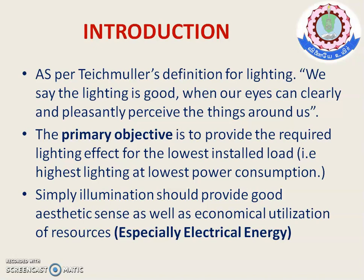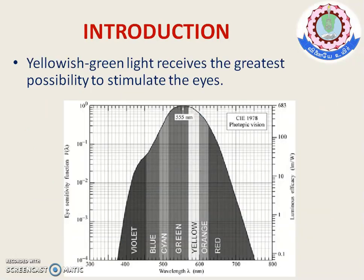Illumination should provide good aesthetic sense as well as economic utilization of resources. Here we are discussing primarily electrical energy. There is also important information: the yellowish-green light receives the greatest possibility to stimulate the retina, because it falls almost on the mid part of the visible spectrum from violet to red, which has the highest sensitivity. That is why in traffic signals, we use yellow and green — they can be easily received by the retina.